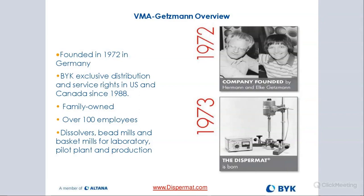The company was founded about 52 years ago. BitGardener has had the exclusive distribution rights since 1988. What happened was the old CEO from BitGardener brought over some Dispermats to the U.S. in the early 80s to their Wallingford facility. Customers touring the facility said they looked really nice and they wanted to purchase some. Since VMA didn't have any source or location in North America, by 1988 they brought that product line over and signed all agreements for BitGardener to become the exclusive distributor.